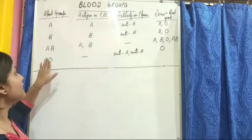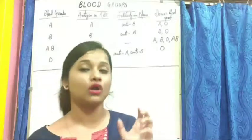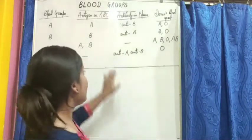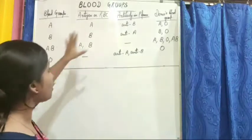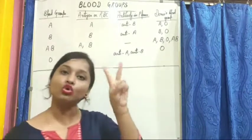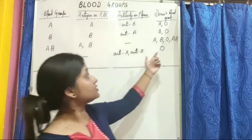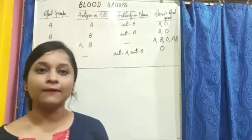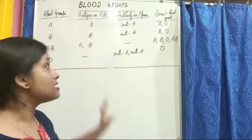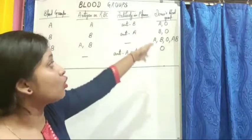A person with blood group O has no antigen on the surface of their RBC — neither antigen A nor antigen B. Their plasma contains both antibodies: anti-A and anti-B. Persons with blood group O can only receive blood from persons also having blood group O. This is a simplified chart showing the antigen and antibody present in each blood group, along with compatible donor blood groups.